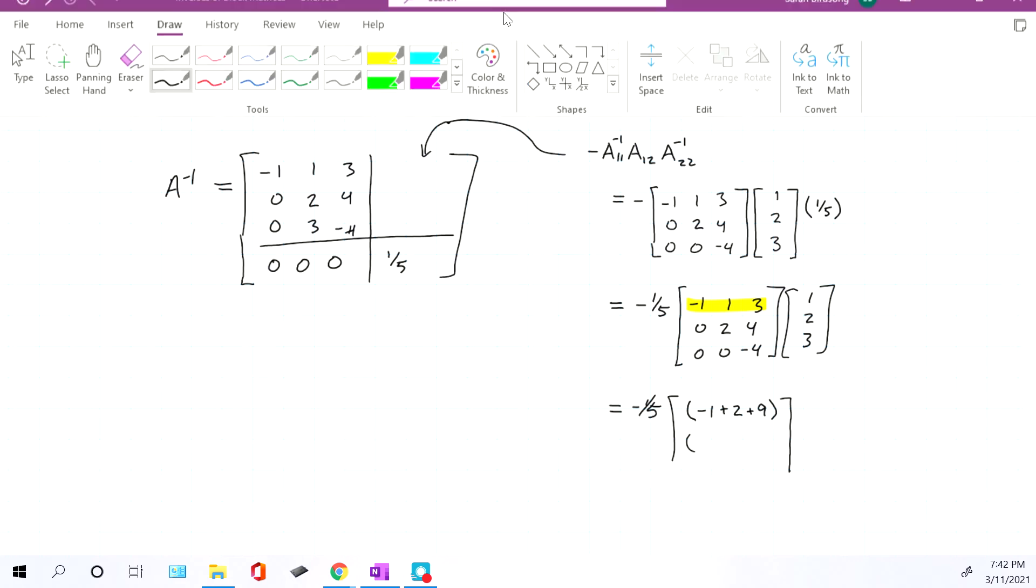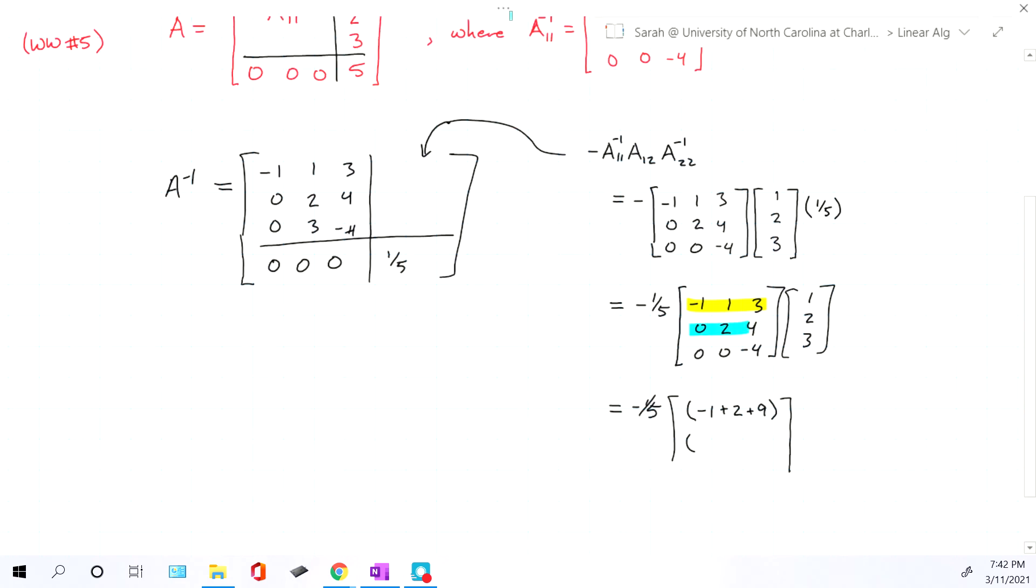Then we look at our second row in the first matrix, and we'll multiply it by each column in the second matrix, i.e. the only column we have. So we'll have zero times one, which is zero. Two times two, which is four. Four times three, which is 12. And then we just have to figure out what that number is.